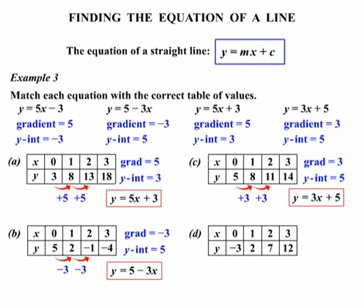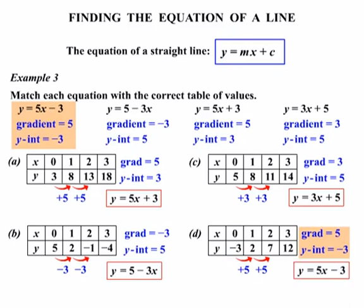For our last one, checking the change in y-values: from minus three to two, it's going up by five. From two to seven, adding five again — so our gradient is positive five. When x equals zero, y equals negative three, so our y-intercept is negative three. There's only one equation left: gradient five, y-intercept minus three, giving us y equals five x minus three.